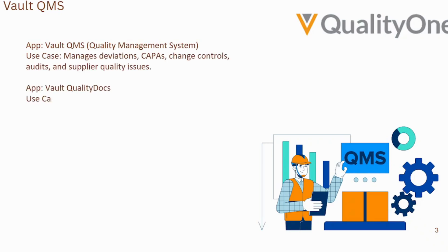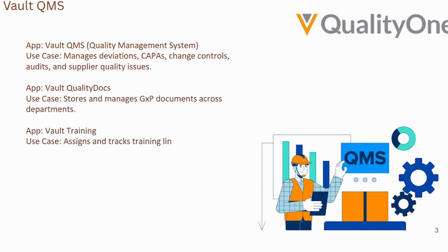Let's dive into Vault QMS. QMS is the heart of quality management in a life science company, with centralized processes like deviation, CAPA, change control, and audit. Nothing will be lost — instead of juggling emails and spreadsheets, teams work in one compliant platform. This ensures faster resolution of issues, better collaboration, and readiness for any regulatory inspection.